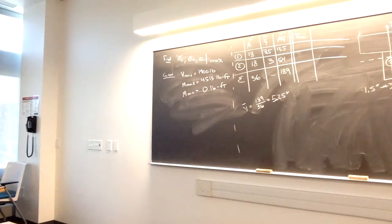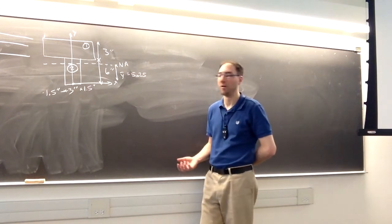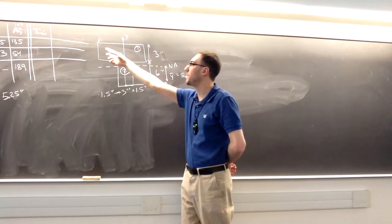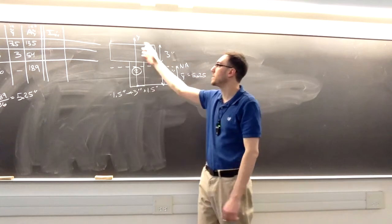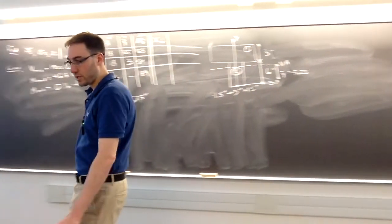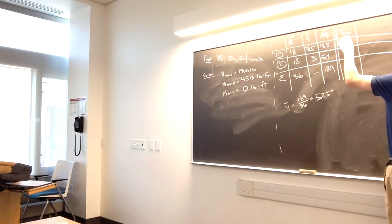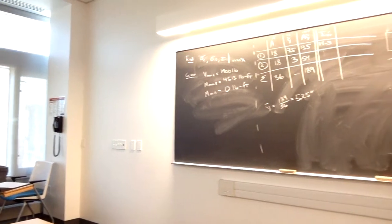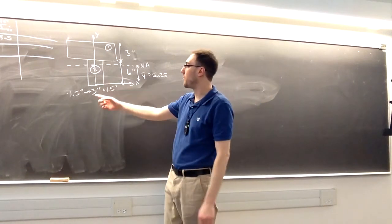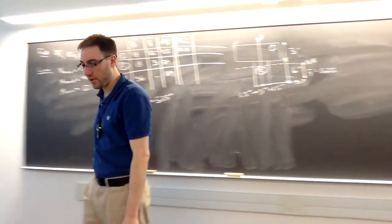For shapes one and two, I want to find the moment of inertia around each shape's own centroid. Since they're rectangles, I use the BH³ over 12 formula. Shape one has a width of 6 and height of 3, giving a moment of inertia of 6 times 3 cubed over 12, which is 13.5 inches to the fourth power. Shape two gives 3 times 6 cubed over 12, a larger moment of inertia of 54.